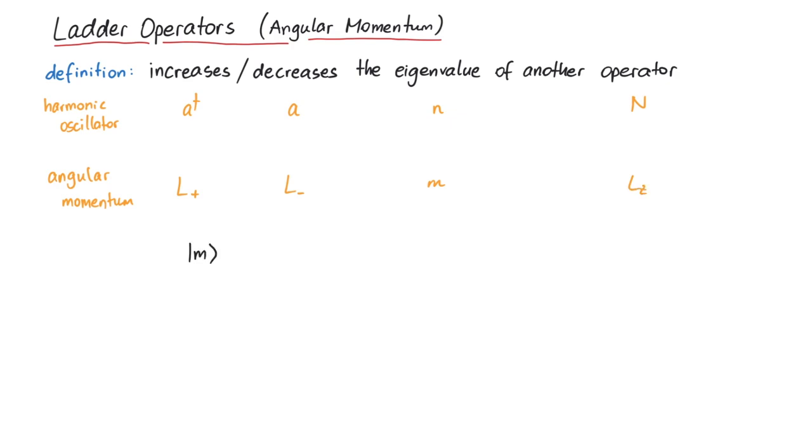If we take some state m, then lz acting on that state gives h bar m times m. We want to have an l plus, so that when we use lz on l plus m, the eigenvalue is not m, but m plus 1, indicating that l plus m has a larger eigenvalue than just m.